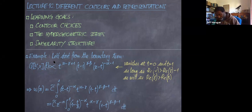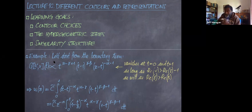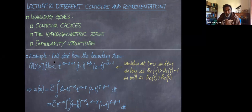We notice that the factor (1−t/z)^(−α) can be expanded in a generalized binomial expansion, because α need not be an integer — it could be a half-integer or even irrational. So we use the generalized binomial expansion in terms of the gamma function, which is a generalization of the factorial and extends the binomial expansion to non-integer powers of α.